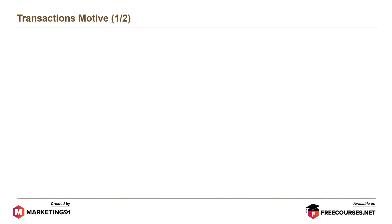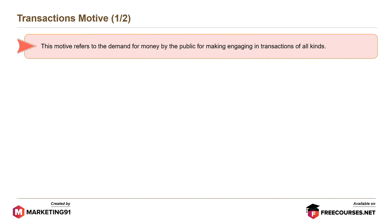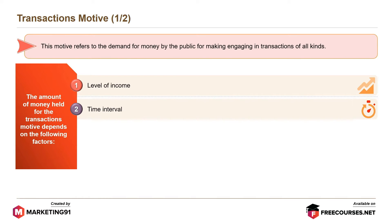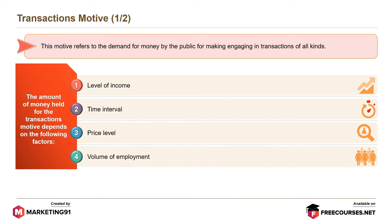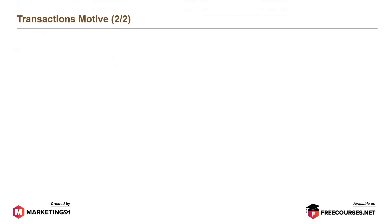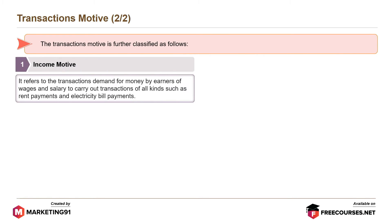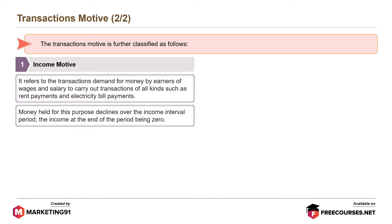The transactions motive refers to the demand for money by the public for making and engaging in transactions of all kinds. The amount of money held for the transactions motive depends on the following factors: level of income, time interval, price level, and volume of employment. The transactions motive is further classified as income motive, which refers to the transactions demand for money by earners of wages and salary to carry out transactions of all kinds, such as rent payments and electricity bill payments. Money held for this purpose declines over the income interval period, the income at the end of the period being zero.